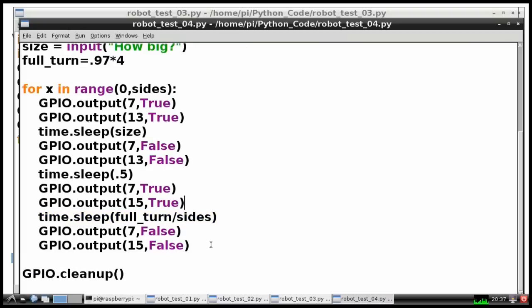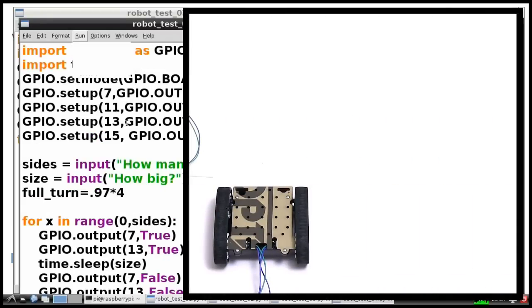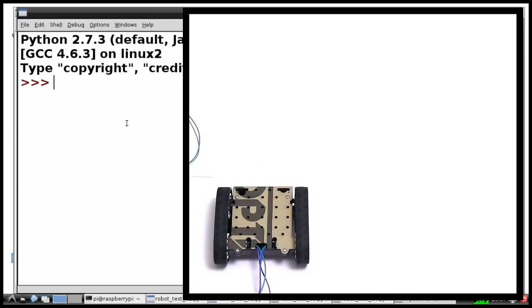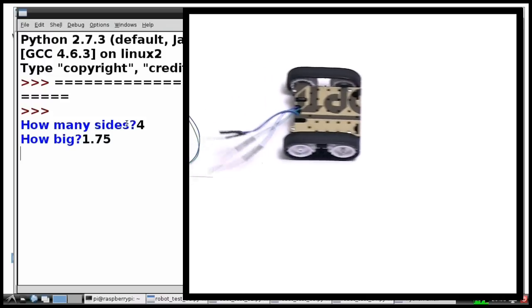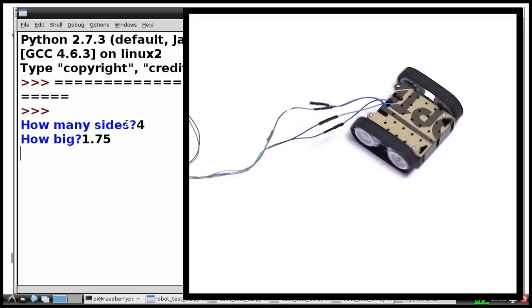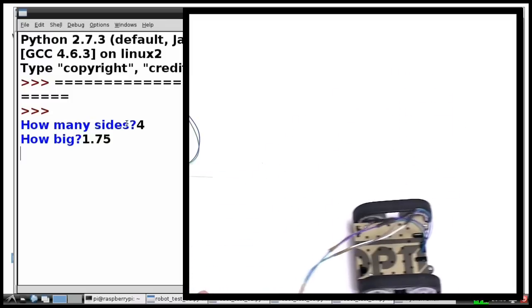So if I run that piece of code it'll ask for our variables. I'm going to say how many sides? Four. How big? We'll do a slightly smaller square, 1.75. Pick a random number. Forward. Two sides. Three sides. Four sides. Turn back again. Again it's slipped a little bit, I'll just stick it back hopefully in view for you.